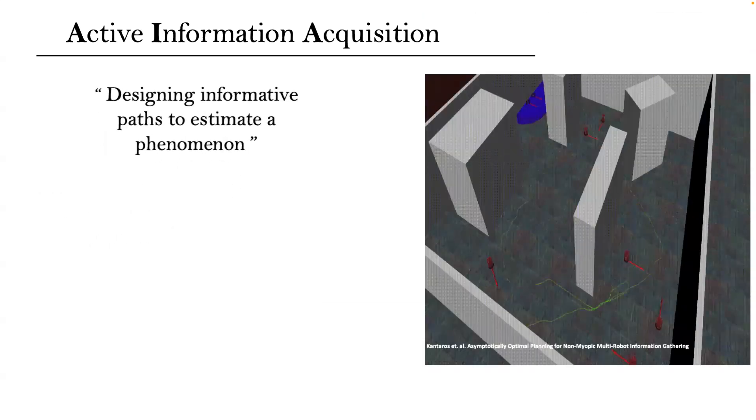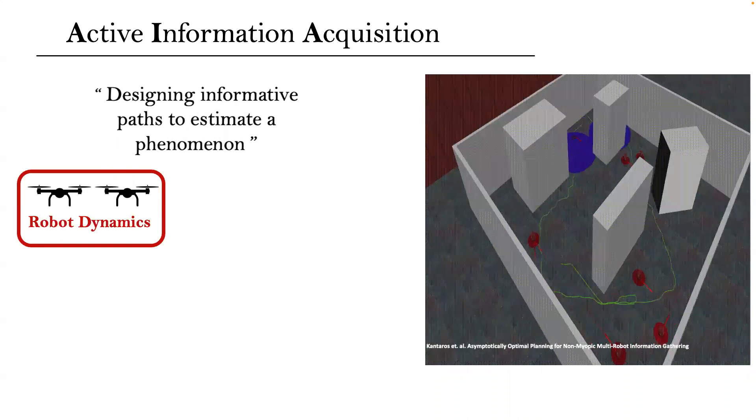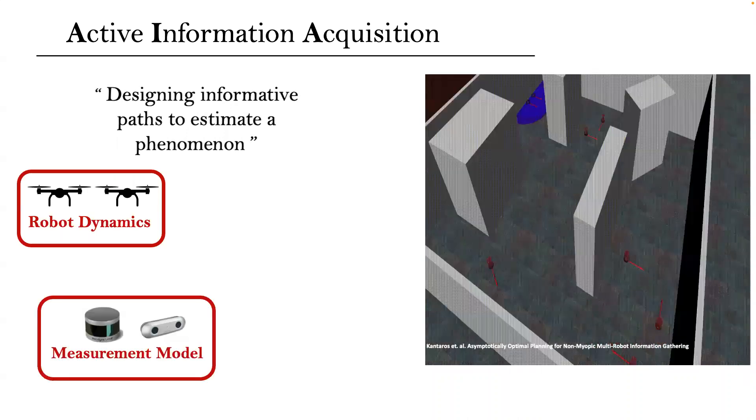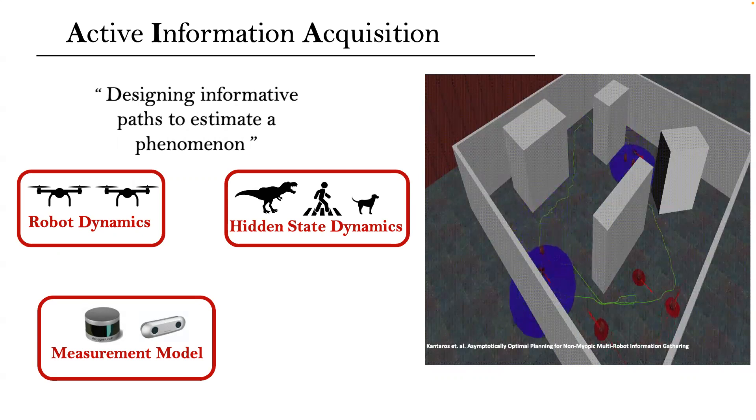Let's analyze the problem through the lenses of target tracking localization. In this video, there is a team of drones with known dynamics equipped with ray sensors seen in blue. Their task is to estimate a hidden state. In this example, localize a known number of mobile robots seen in red over a known location with known dynamics.